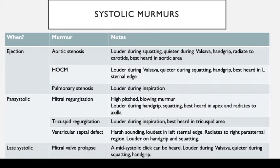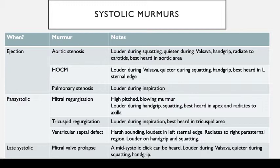Aortic stenosis radiates to the carotids and is best heard in the aortic area — second intercostal space on the right. We can do certain manoeuvres to change its intensity. For aortic stenosis, it is louder when you ask the patient to squat down, because squatting increases blood flow into the heart and therefore more blood tries to flow through the aortic valve. It is quieter with a Valsalva manoeuvre, because preload decreases, or with hand grip, because afterload increases.